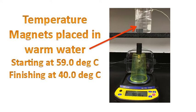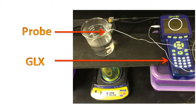So we started the experiment at 59 degrees Celsius, and as the water cooled, we stopped the experiment finally at 40 degrees Celsius. This is the equipment that we used to measure the temperature of the water, which is, in effect, the temperature of the magnets. We have a probe that's connected to a GLX, and notice I've circled the temperature there, 49 degrees Celsius.